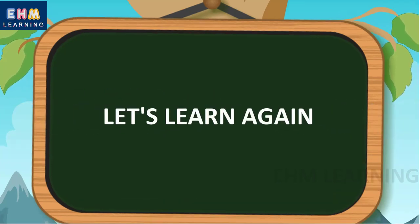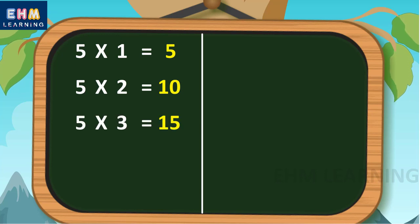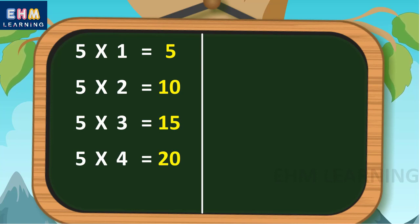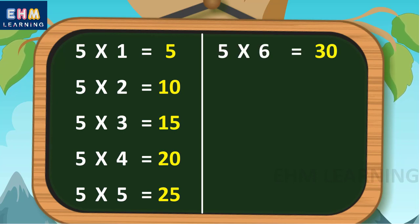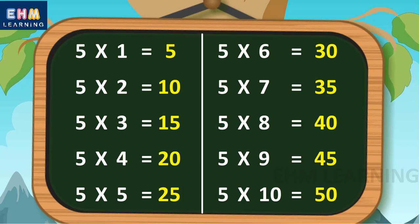Let's learn again. Five ones are five, five twos are ten, five threes are fifteen, five fours are twenty, five fives are twenty-five, five sixes are thirty, five sevens are thirty-five, five eights are forty, five nines are forty-five, five tens are fifty.